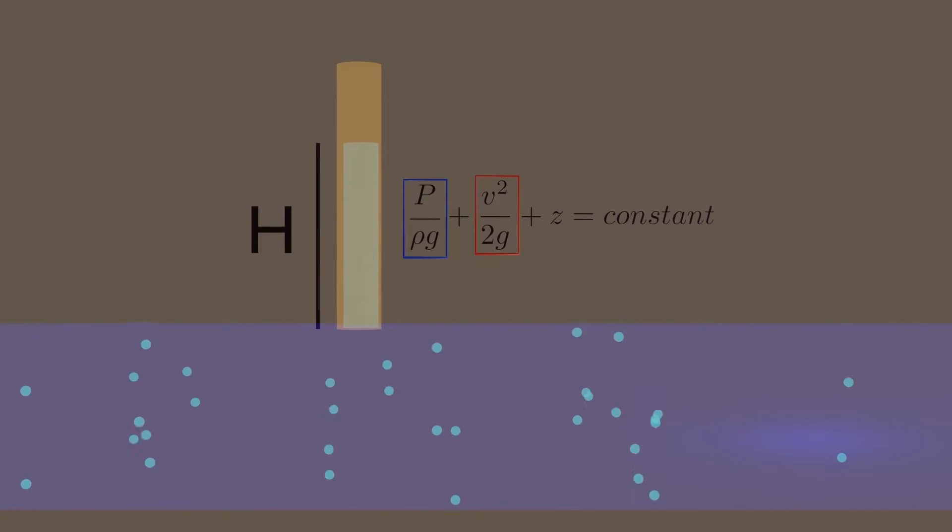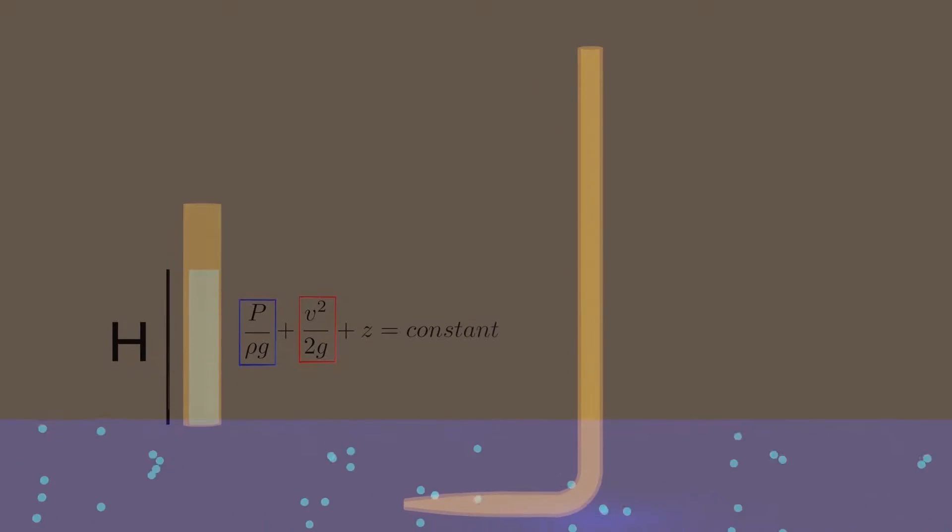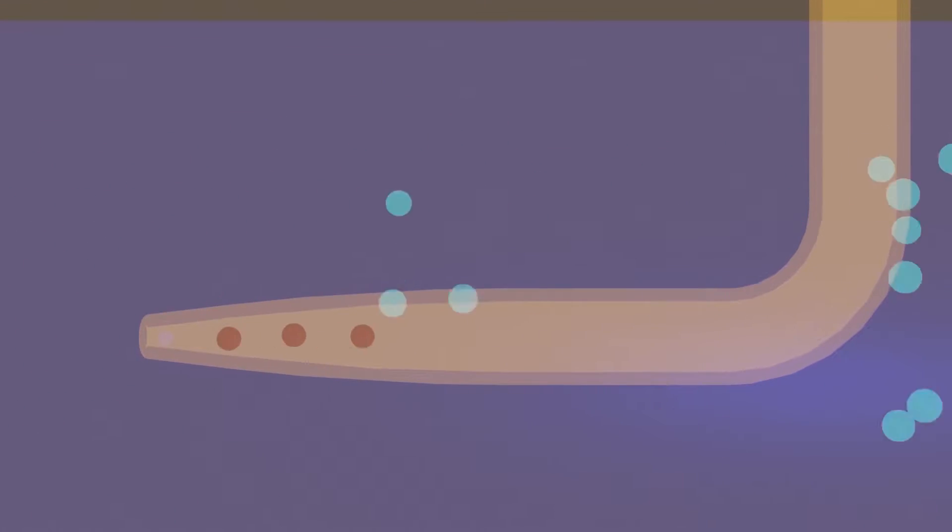Next term is called the velocity head, and we can easily visualize this with the help of pitot tube. When it is fitted, the water particles get trapped because of its small cross-section area and reduces the particle velocity to zero.